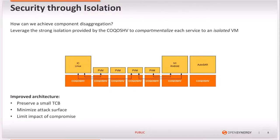Our answer on how to achieve this disaggregation is by leveraging the strong isolation provided by the hypervisor to compartmentalize each service into an isolated VM. We can break down the large PVM into a set of specialized guests, each providing a single functionality. This gives us an improved architecture with respect to security, as we preserve a small TCB by minimizing the attack surface and limit the impact of compromise to a single service.